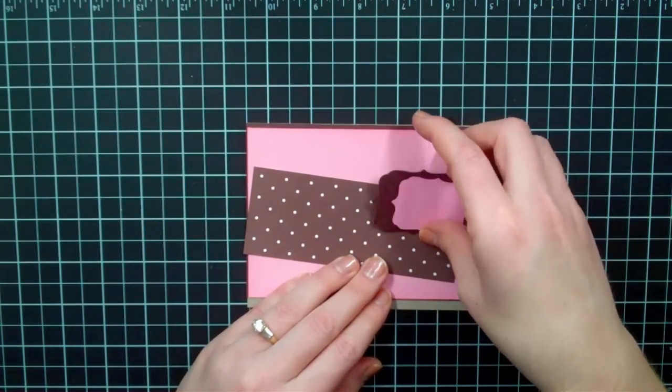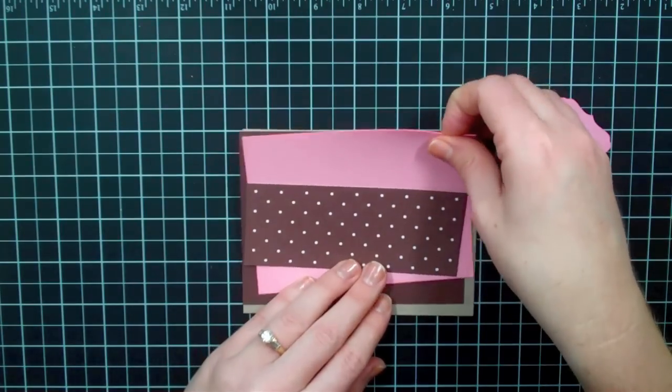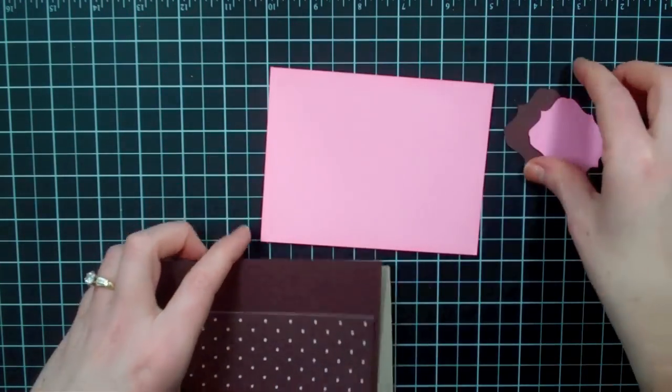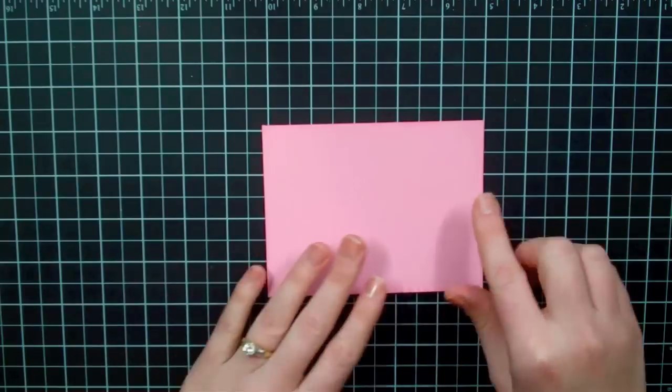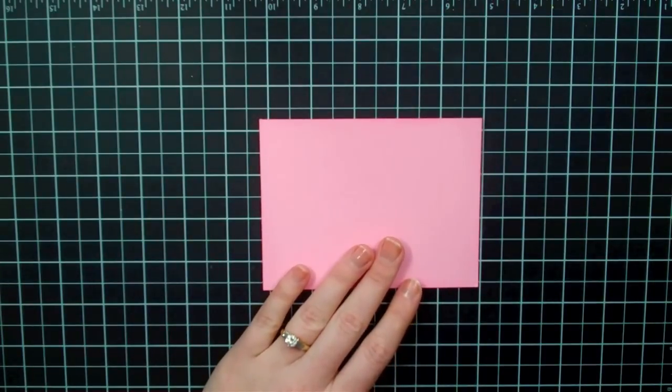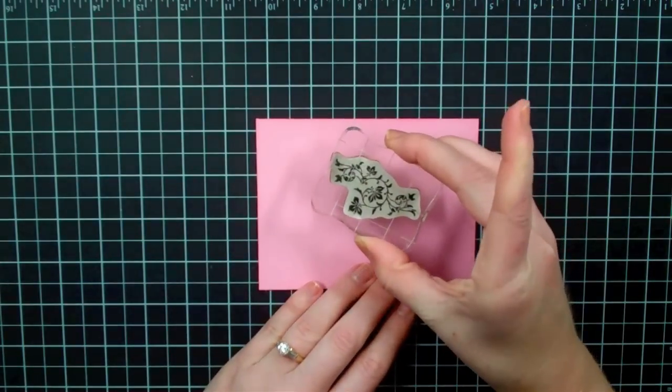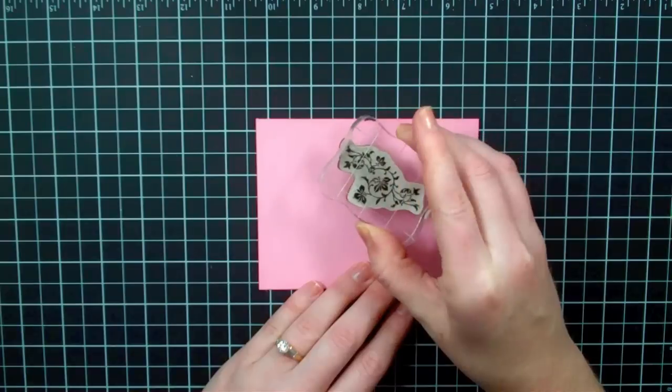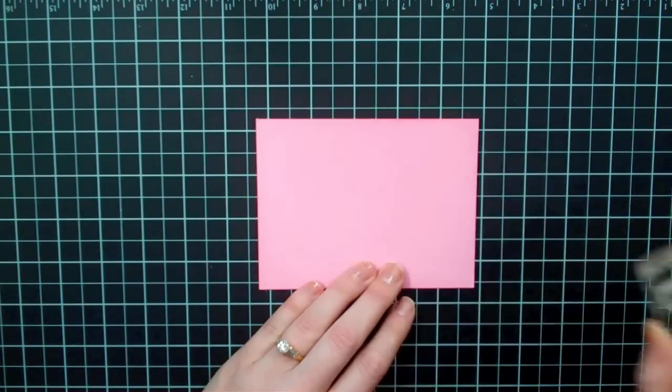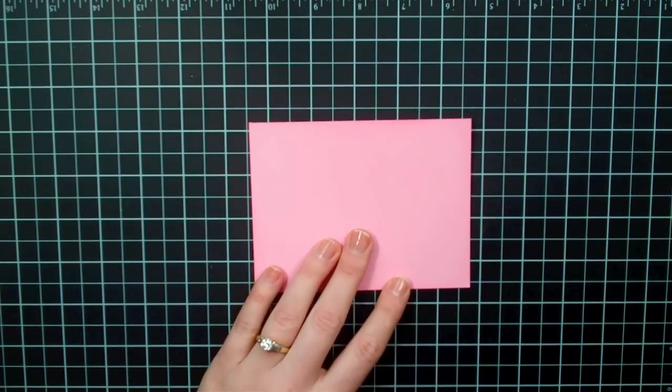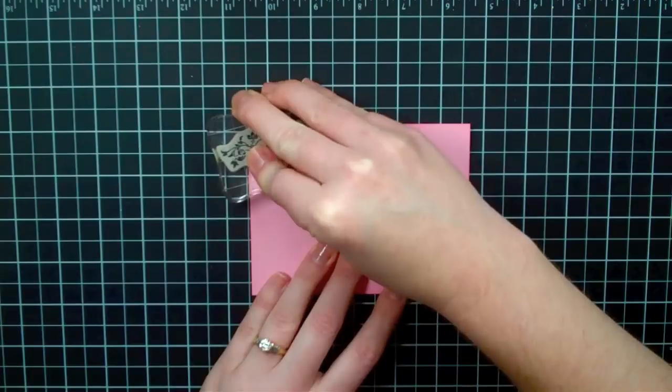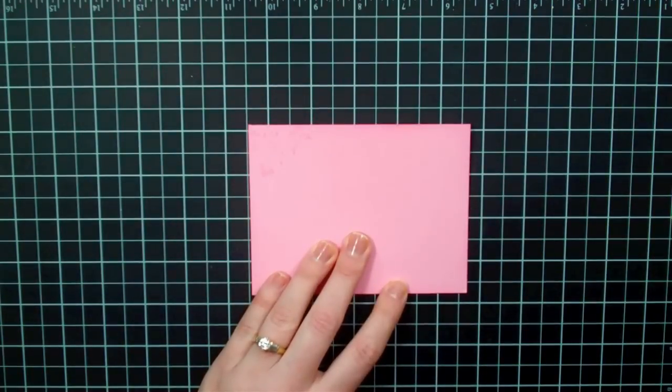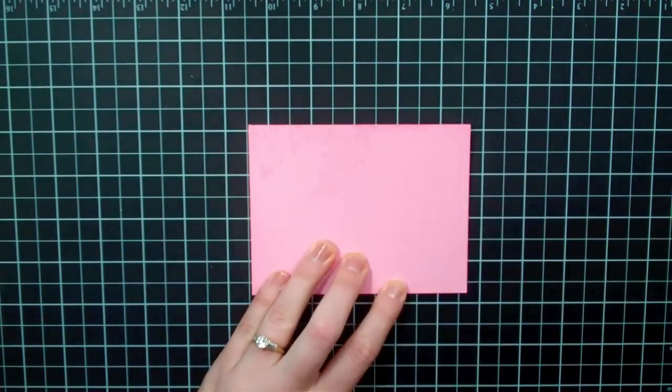For my first step, I'm going to take my Pretty in Pink cardstock. It has been sponged around the edge. I'm going to take this stamp which is from the Vintage Vogue stamp set that's in the new Occasions Mini catalog. On this piece of Pretty in Pink paper, I'm just going to stamp this kind of randomly along the top.